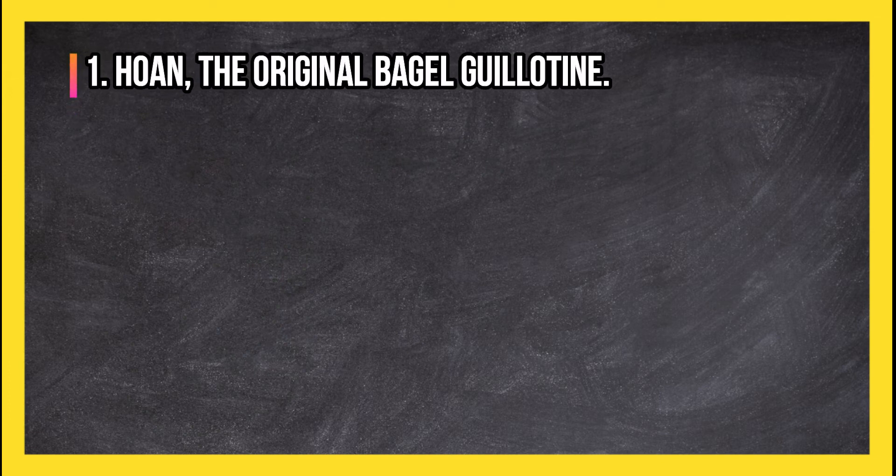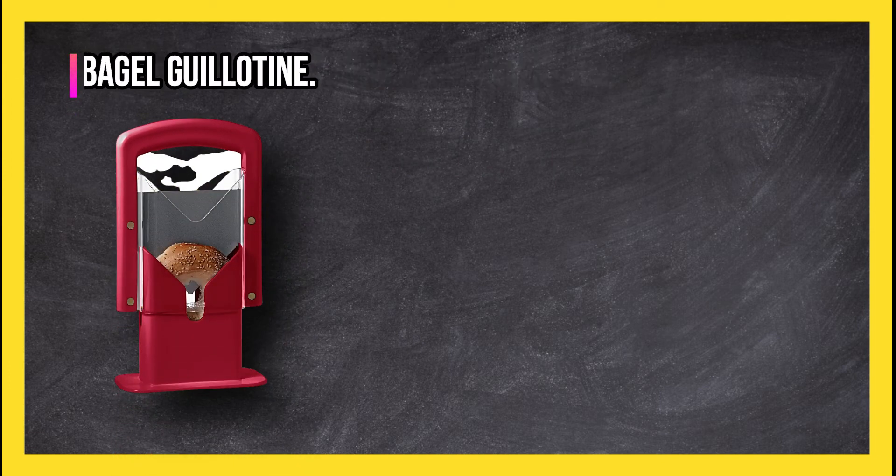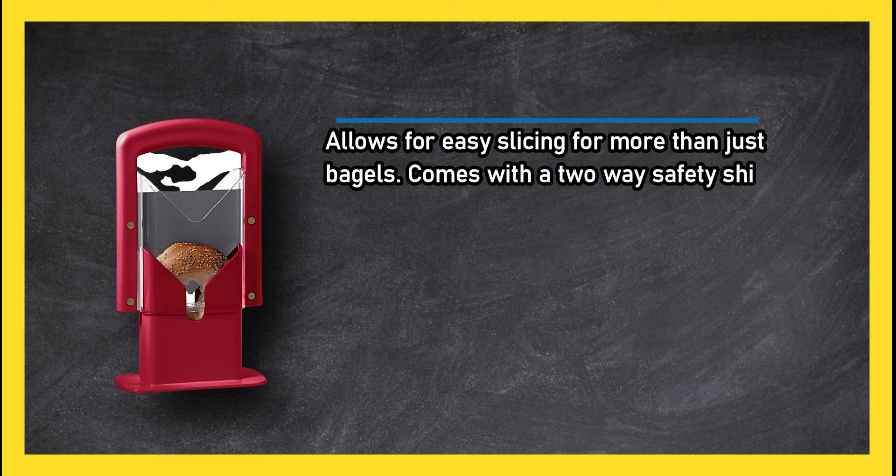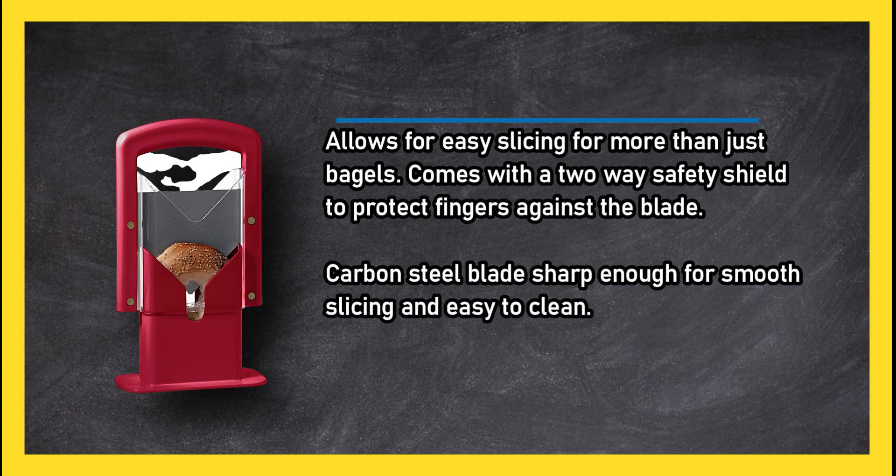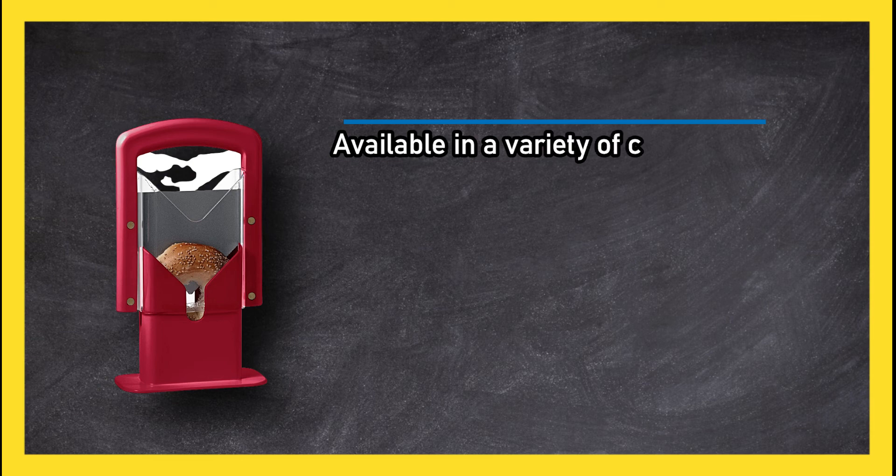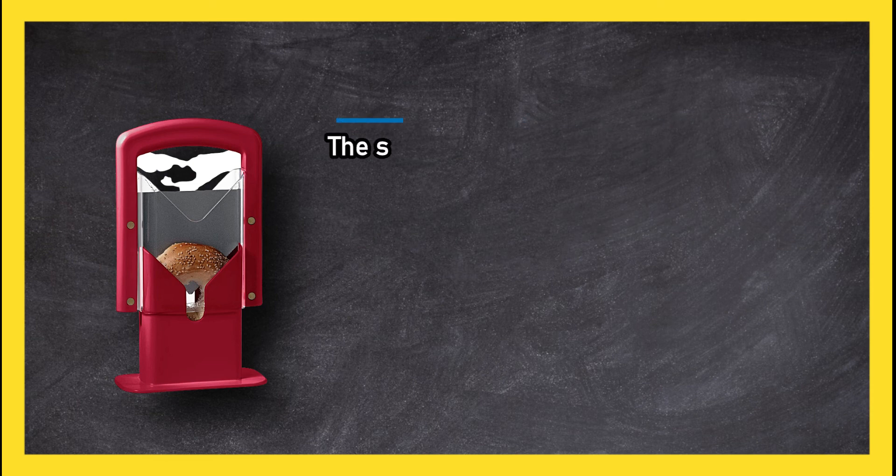At number one, Home the Original Bagel Guillotine allows for easy slicing for more than just bagels. Comes with a two-way safety shield to protect fingers against the blade. Carbon steel blade sharp enough for smooth slicing and easy to clean. Available in a variety of colors, popular choice and trusted brand with added features. The slicer is only for certain sized bagels.